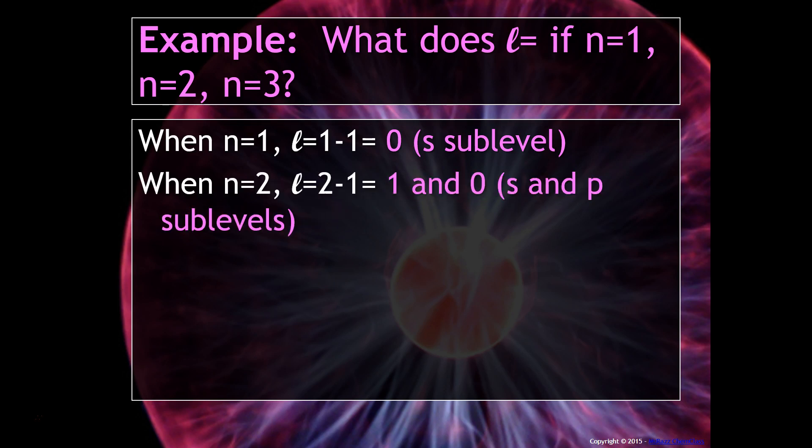So N equals 2, there are only two types of sublevels, an S and a P. So that means that it has to be 1 and 0 for those quantum numbers. And then finally, when N equals 3, there are three types of sublevels. You have an S, a P, a D, and an F. And again, S is 0, P is 1, and D is 2.